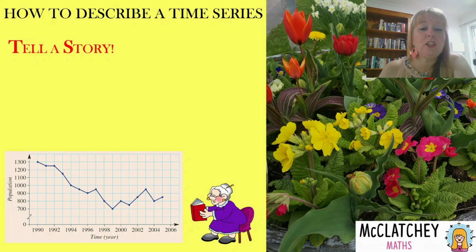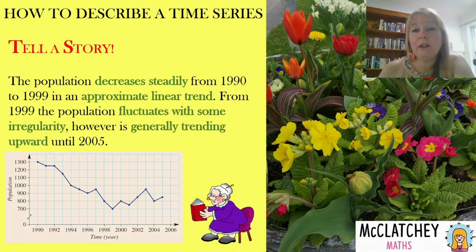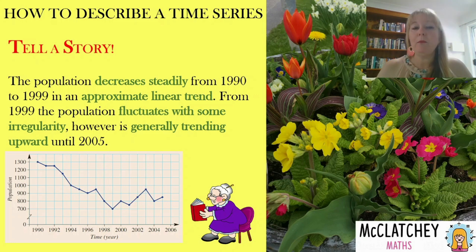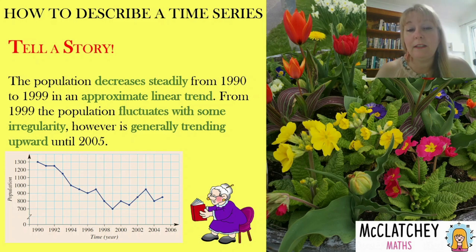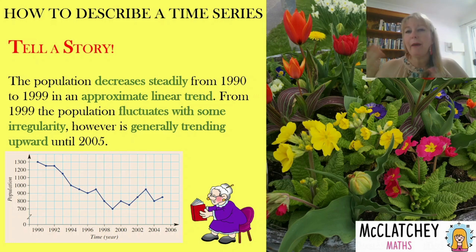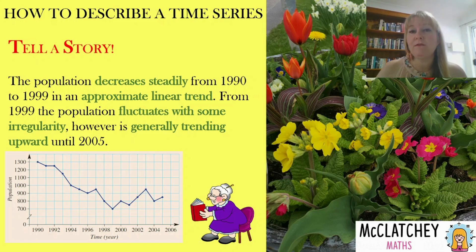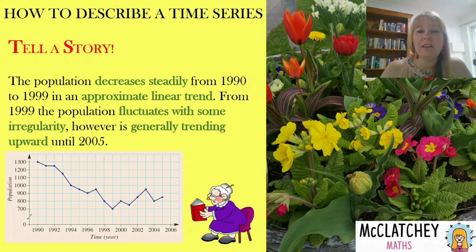Let's look at an example — population over about a 15-year period. I could describe it by saying: the population decreases steadily from 1990 to 1999, and that's approximately linear. Then from 1999, it fluctuates with some irregularity. Then from there it starts trending up until about 2005. So you can see we've got two or three different things happening: a downward approximately linear trend, followed by some irregular fluctuations with a general upward trend. It's okay to combine your new vocabulary together as long as you are correct.